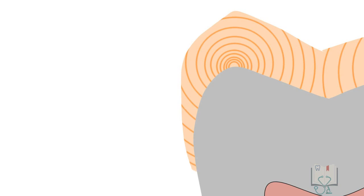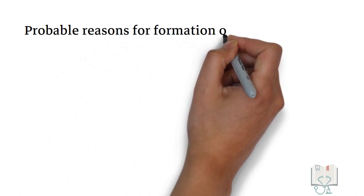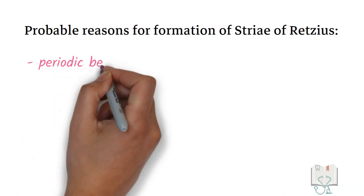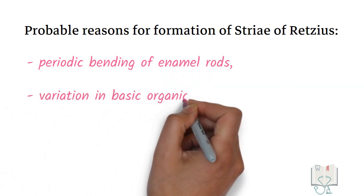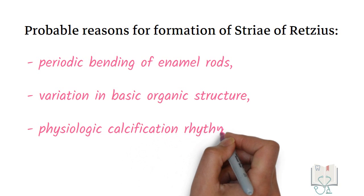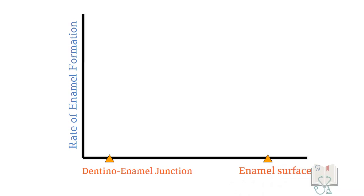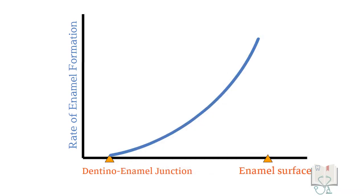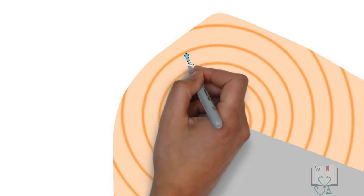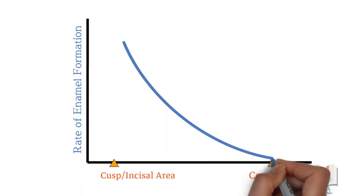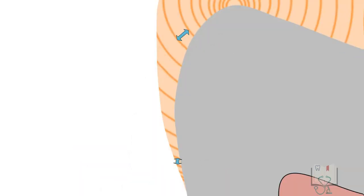These striae illustrate the incremental pattern of enamel deposition — that is, a successive appositional pattern. These lines may reflect variations in structure and mineralization, though the exact reason for their formation is not known. They may be due to periodic bending of enamel rods, variation in basic organic structure, or physiologic calcification rhythms. The enamel deposition rate from the dentino-enamel junction to the outer surface increases, which is why the gaps between successive striae increase. However, the deposition rate from the cusp area to the cervical line decreases, resulting in a decrease in gaps between successive striae.